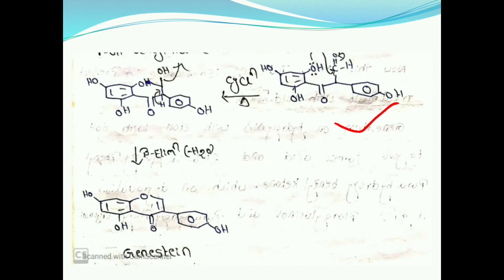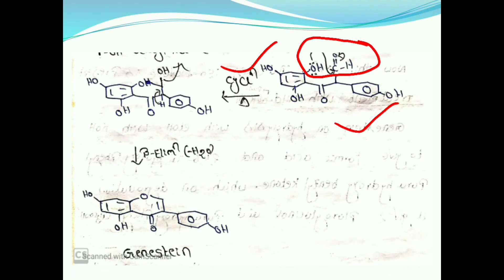This is the newly formed, unstable compound. This unstable compound undergoes cyclization reaction, in which a new bond is formed between the oxygen atom of the OH group and the C=O group. This compound then loses a water molecule. Finally, we get genistein.